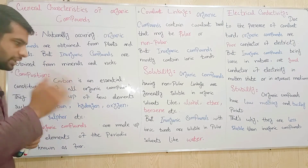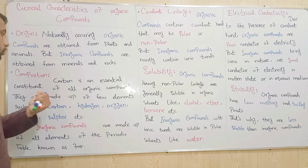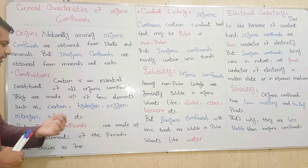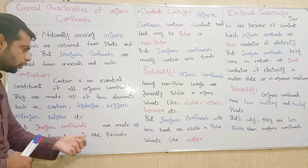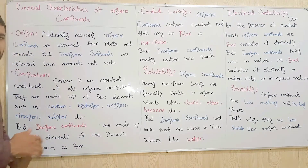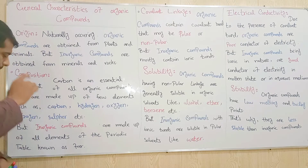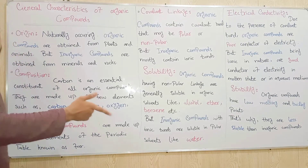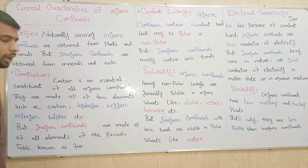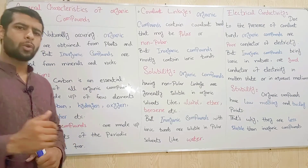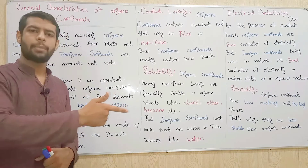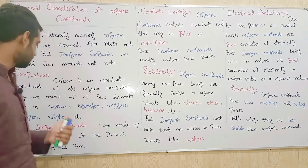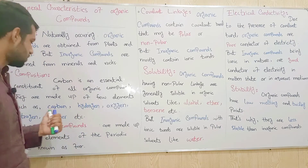The second point is composition. Carbon is an essential element or constituent of all organic compounds. They are made up of few elements such as carbon, hydrogen, oxygen, nitrogen, and sulfur. But inorganic compounds are made up of all elements of the periodic table, except carbon, hydrogen, oxygen, nitrogen, and sulfur.